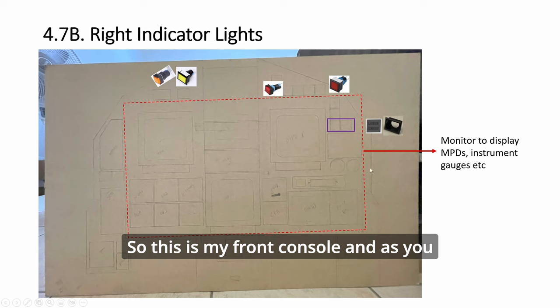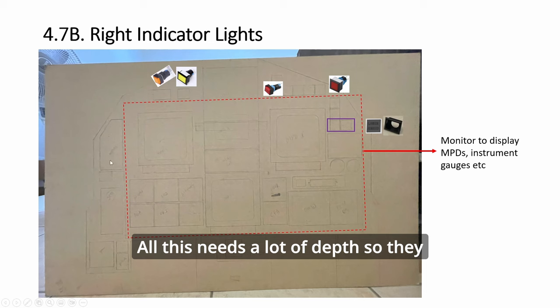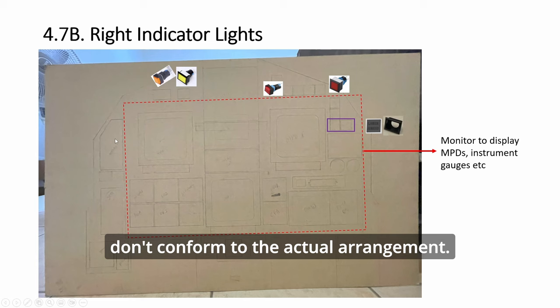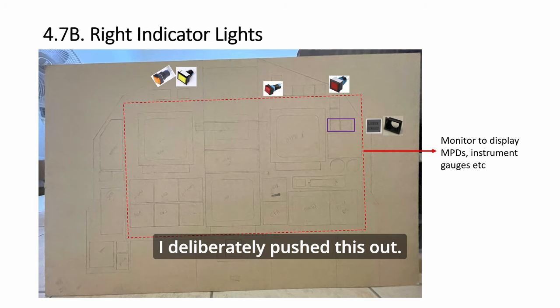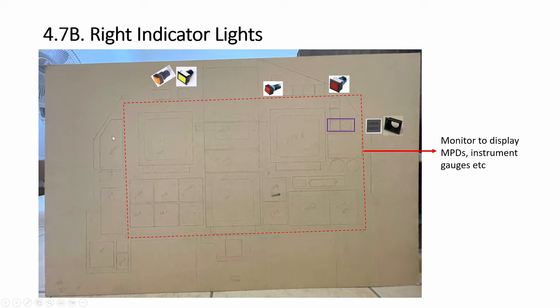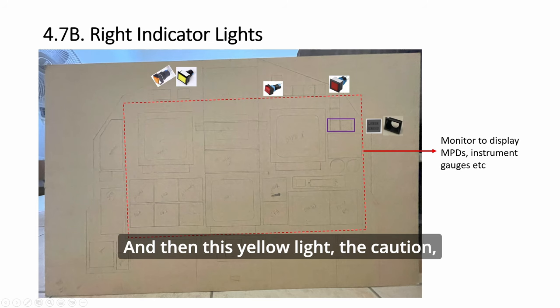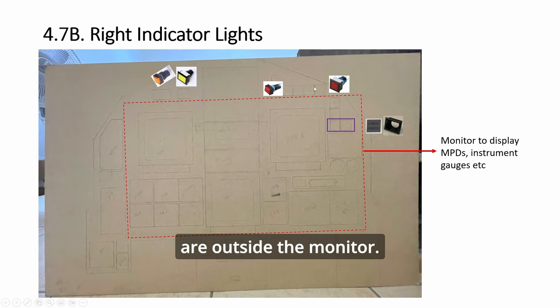This is my front console. As you can see, I push certain things out to avoid the monitor. All this needs a lot of depth, so they don't conform to the actual arrangement. I deliberately push this out. The yellow light and the caution, these two stack together. The square ones for all these are fine, they're outside the monitor.